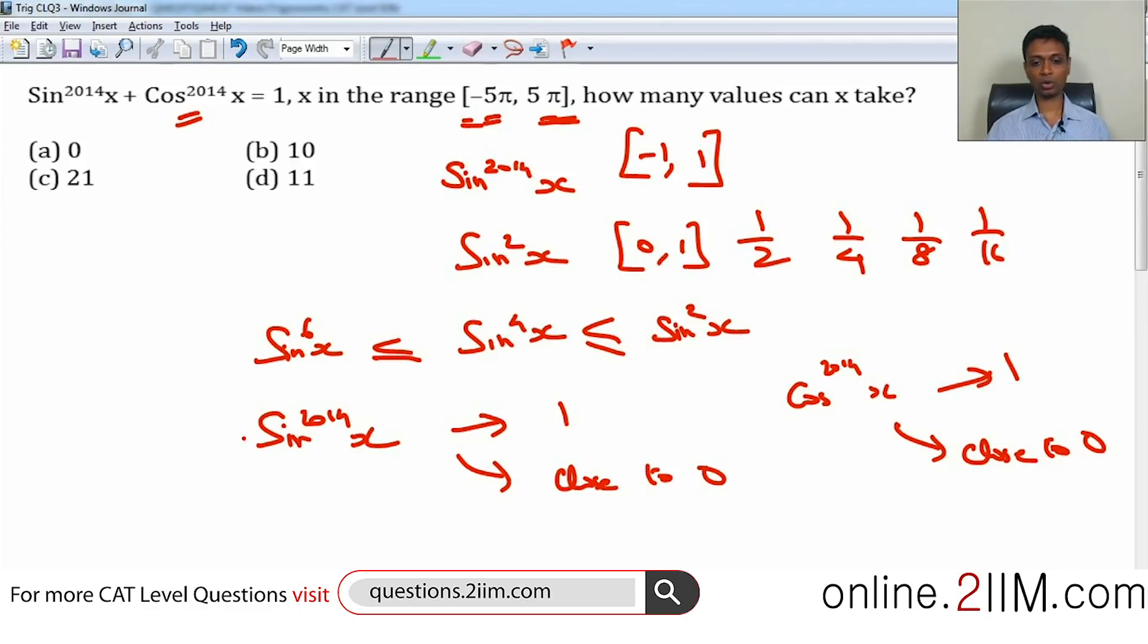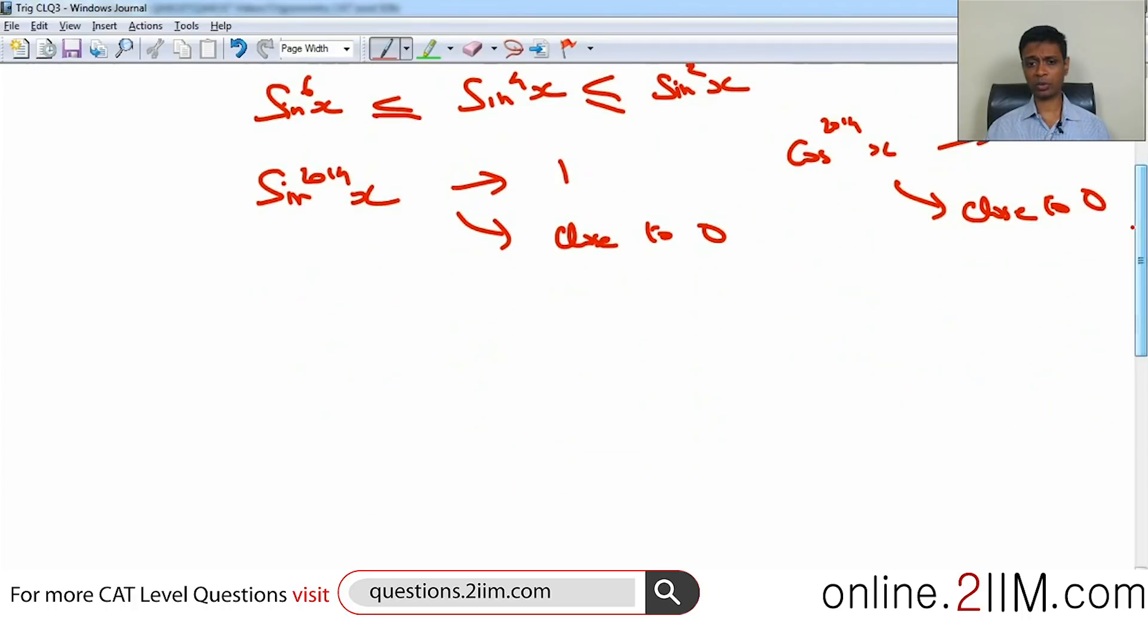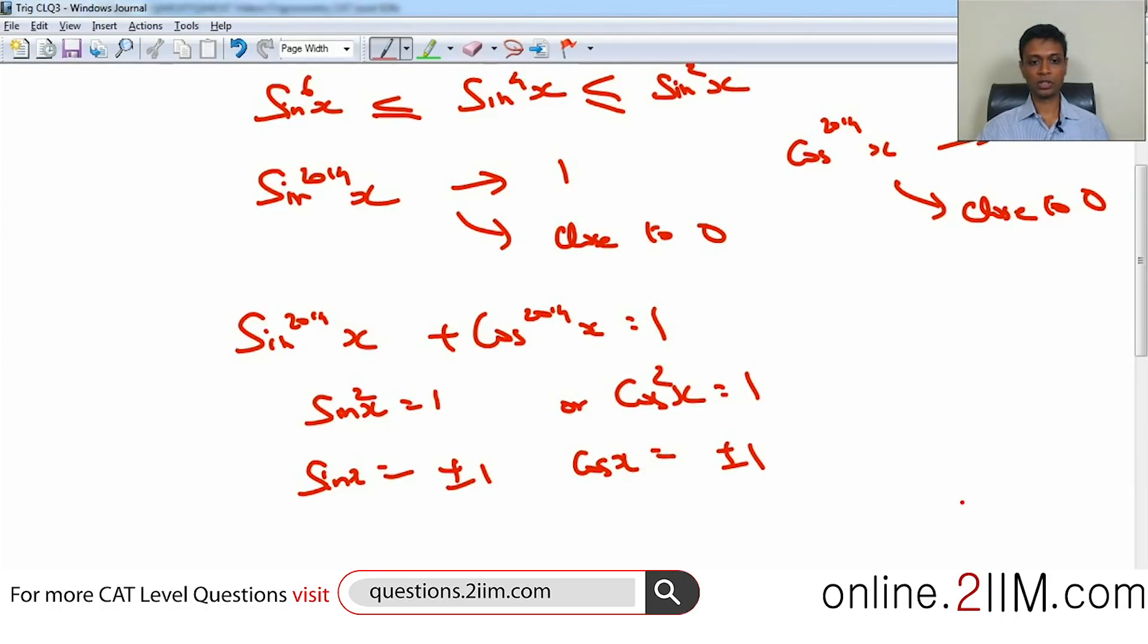So if sin^2014(x) plus cos^2014(x) equals 1, this can happen if sin(x) equal to sin²(x) equal to 1 or cos²(x) equal to 1. No other situation is just possible. Because if either of them is not 1, they will go close to 0, they cannot add up to 1. Or we are looking for sin(x) is plus or minus 1, cos(x) is plus or minus 1.